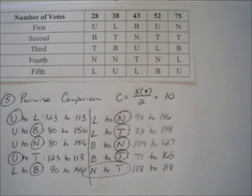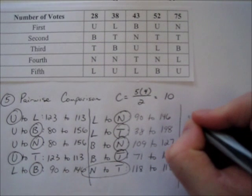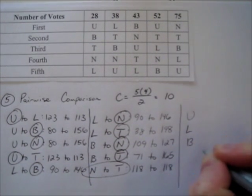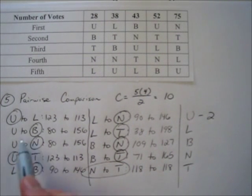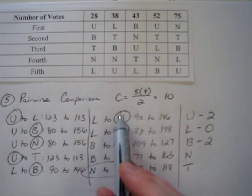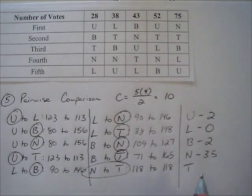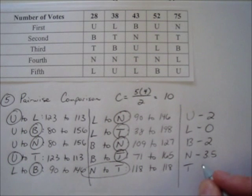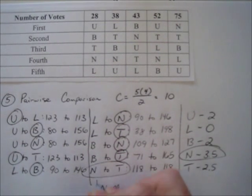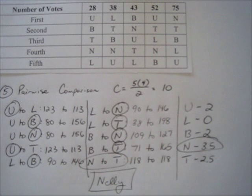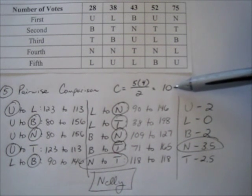Now we count up total points: Usher has 2 points, Lifehouse has 0, Blue Cantrell has 2, Nelly has 3.5, and Train has 2.5. The most points wins the election — 3.5 is the greatest total, so Nelly wins using the pairwise comparison method. Notice that 2 plus 0 plus 2 plus 3.5 plus 2.5 equals 10, which must always be true for pairwise comparison.